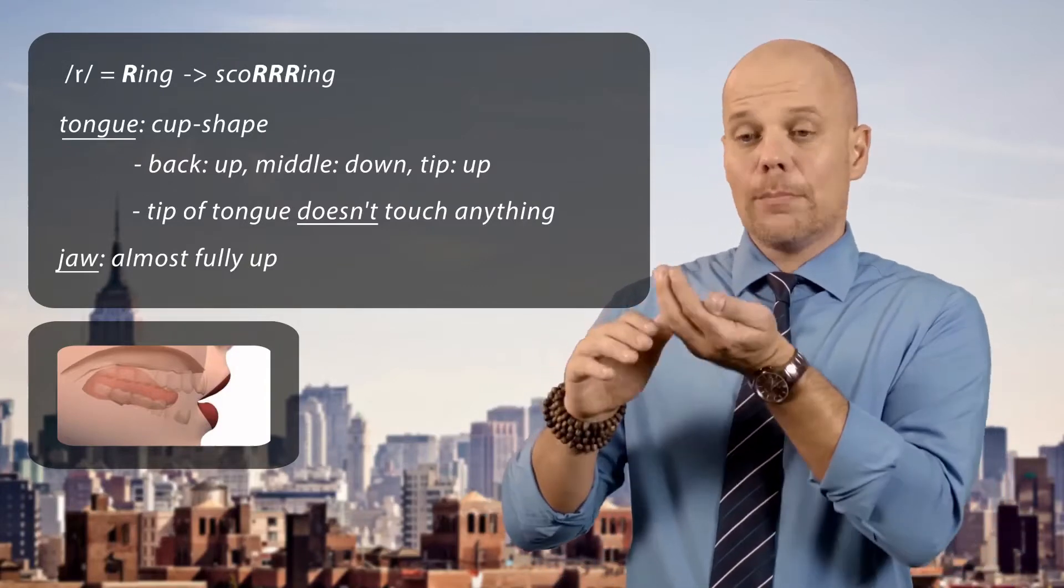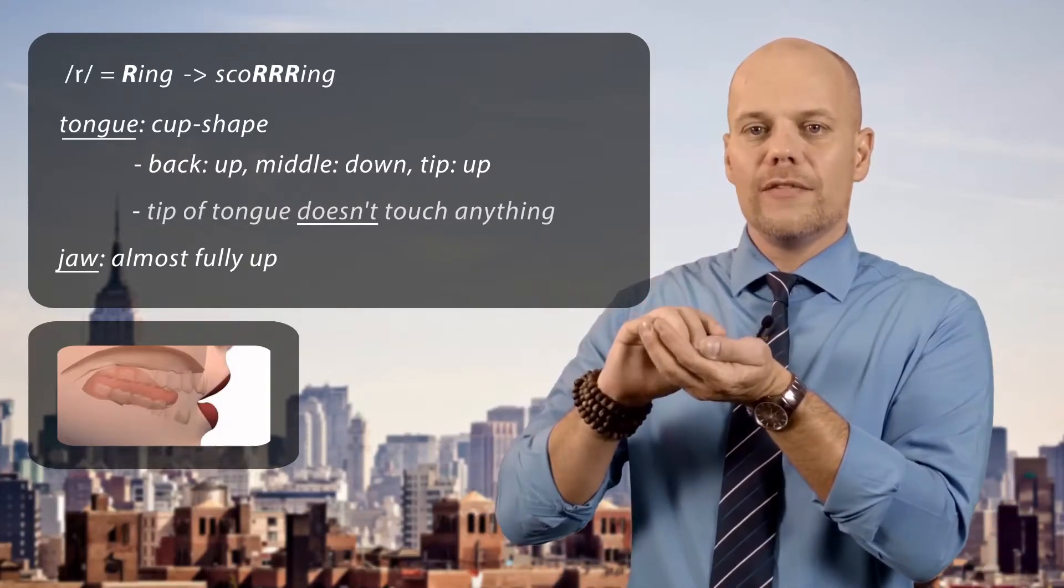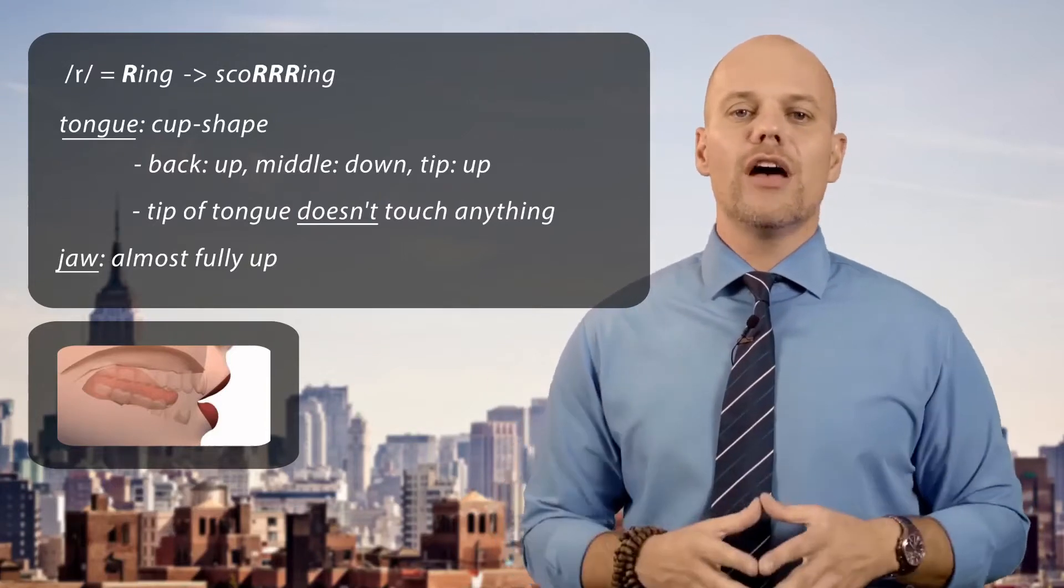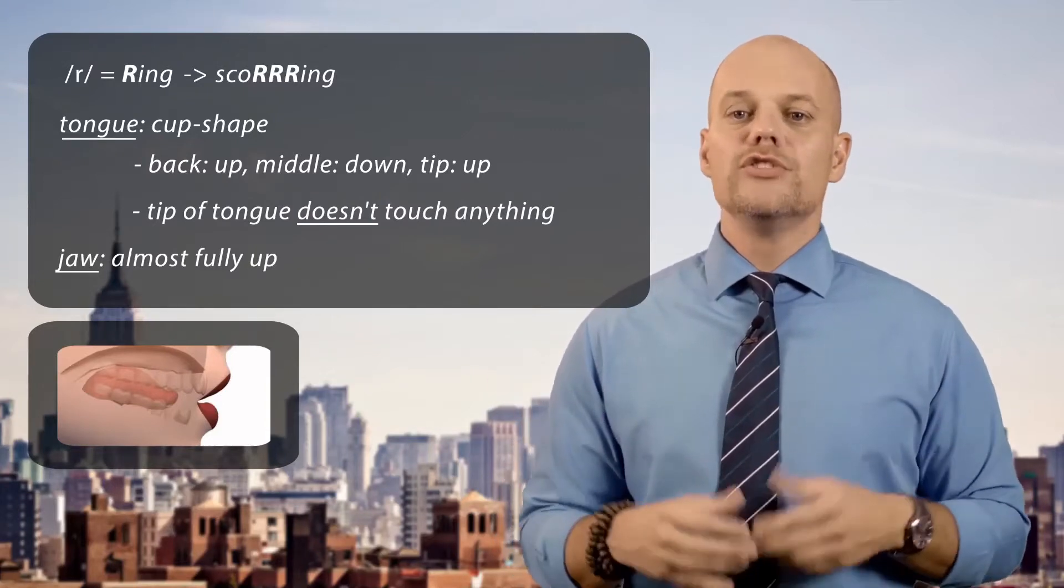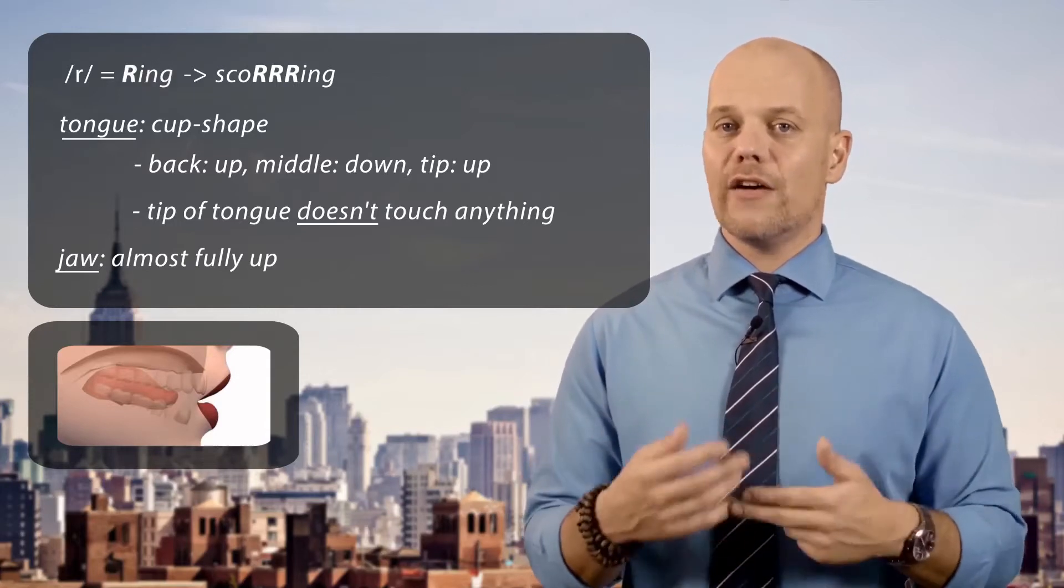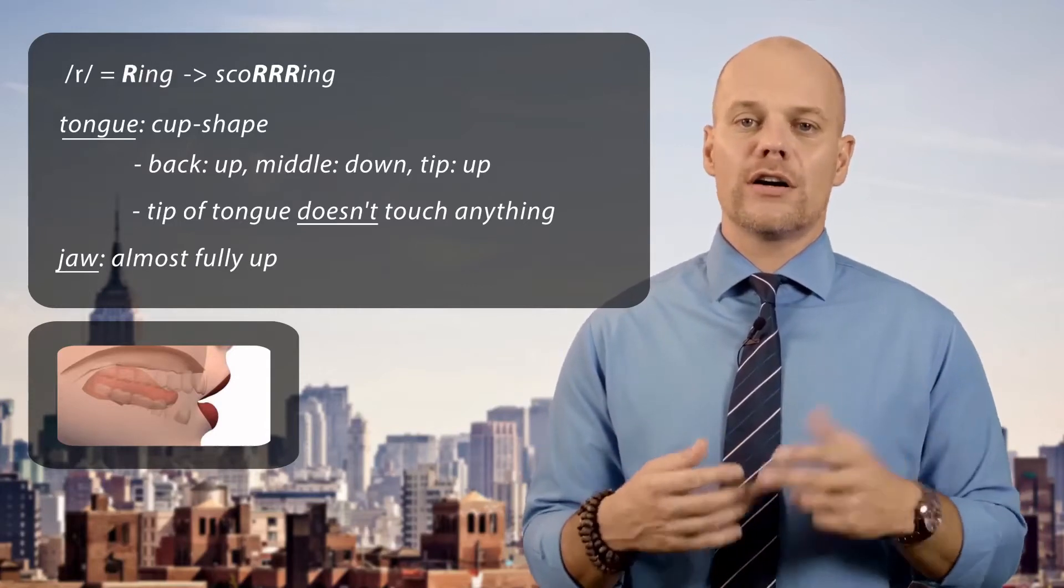Tip of the tongue is pointing up, but it's not touching anything. If you feel like you have lost the R sound, just go back to rink and practice that a few times with a long R sound.